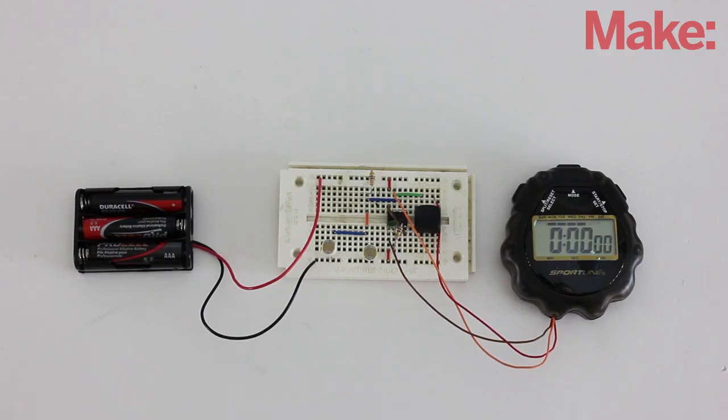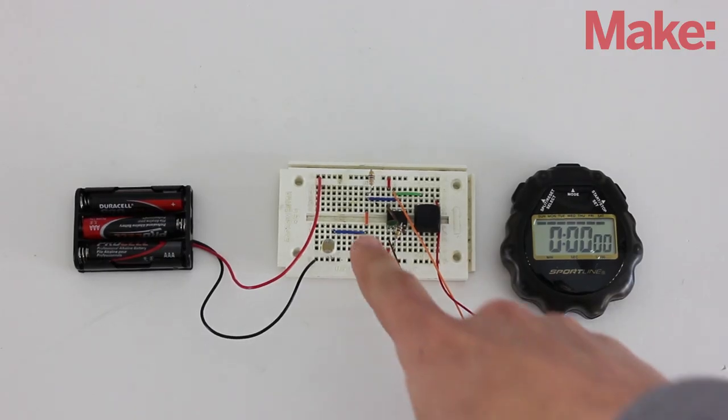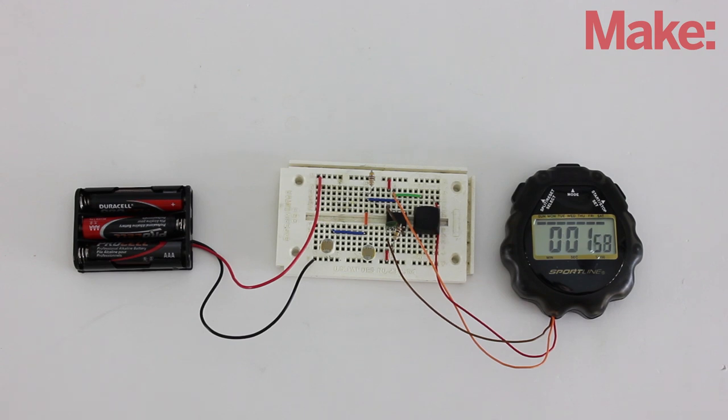First, I prototyped the circuit on a breadboard. When you cover up one sensor, the timer should start. When you cover up the other sensor, the timer should stop.